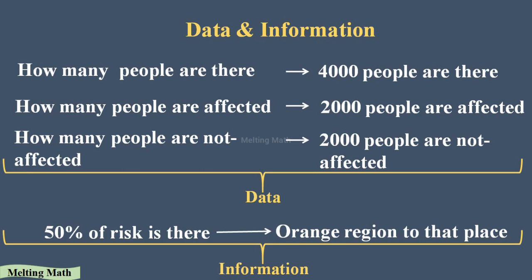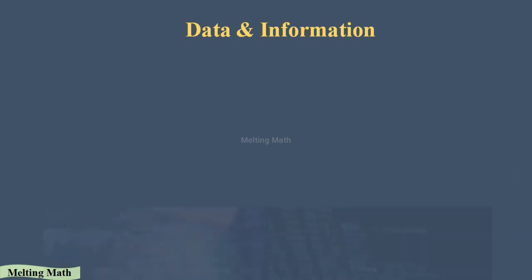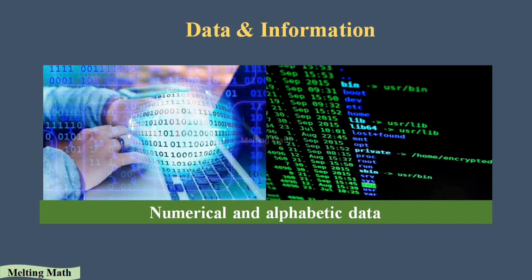So, data is the collection — how many people are there, how many are affected, how many are not — and the conclusion drawn from that data is called information. The 50% risk and the orange zone label are the information. In a computer, data is stored in numerical and alphabetical form, and when we search anything, it gives us information from those numerical and alphabetical values.